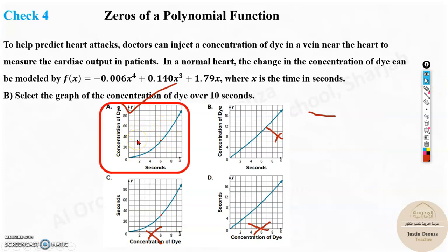A is your correct graph. So this is the correct graph. This is the shortcut method. Just take a value, check whether the answer is correct, and see the axes, proper axes, and then you can easily eliminate the other options and choose the correct answer.